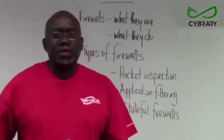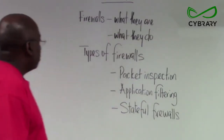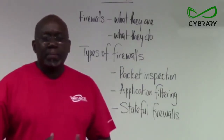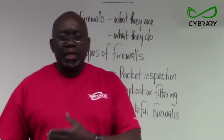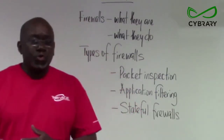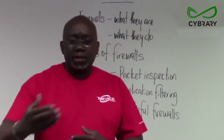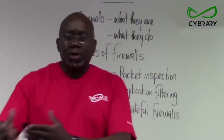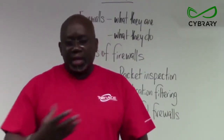We have several types of firewalls. We have packet inspection firewalls — as the name implies, they inspect every packet coming into or leaving the network. The firewalls have a set of rules by which they inspect these packets. If a packet triggers a rule, the firewall blocks that traffic. Where no rules are triggered, the firewall allows the traffic whether incoming or outgoing.